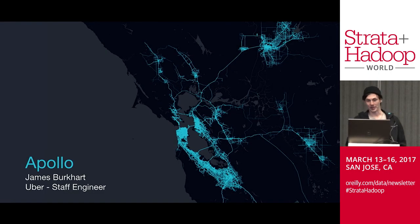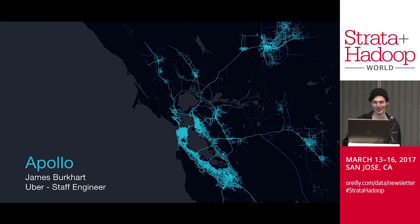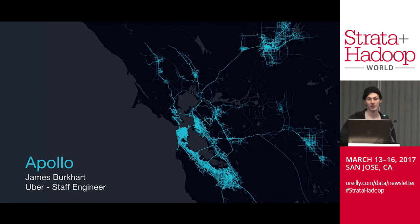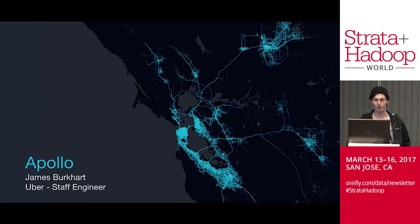I'm here to talk about a real-time time series analytical platform that we've built in-house at Uber called Apollo. Forgive the mythological name — naming is really hard. A little bit about my background: I've spent almost three years at Uber, all on the data engineering team. My first year I built the predecessor to this system, and the past two years building and shipping it. Before that, I was at Rackspace, where I worked on an open source time series database built on top of Cassandra called BlueFlood.